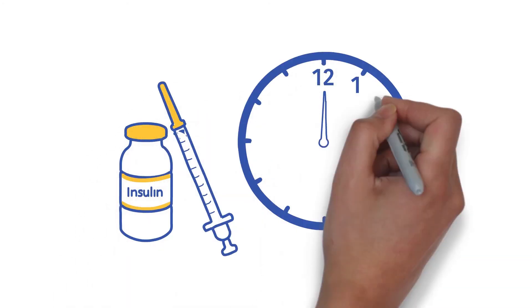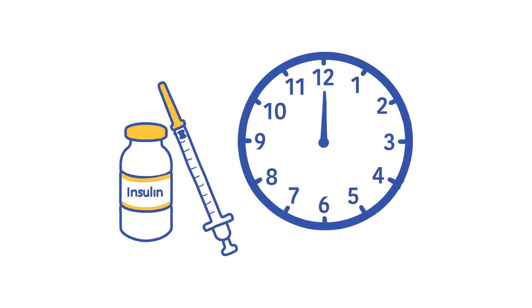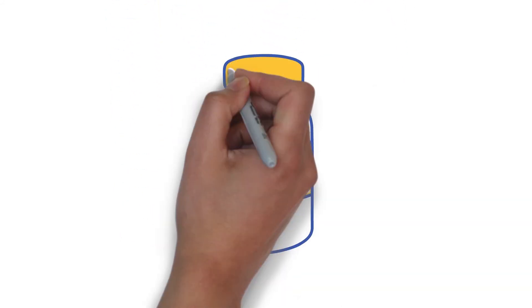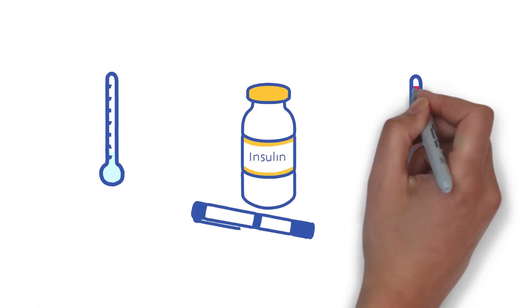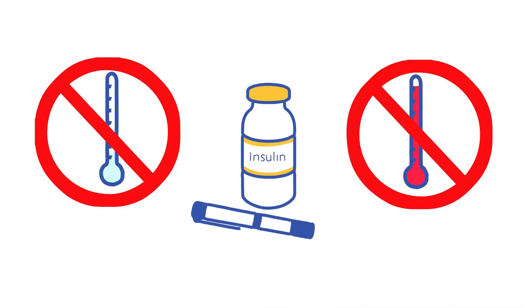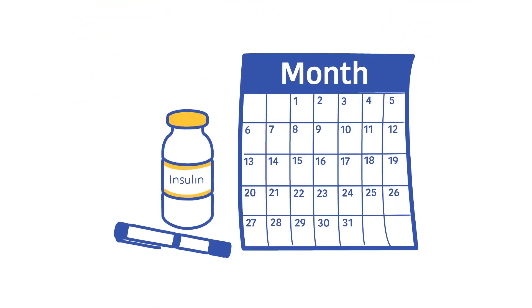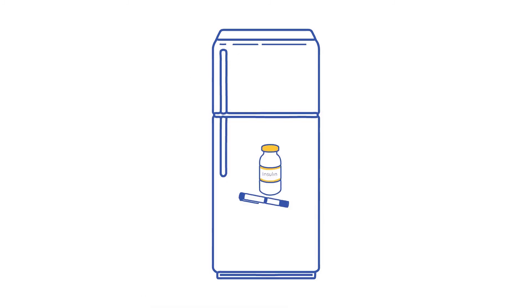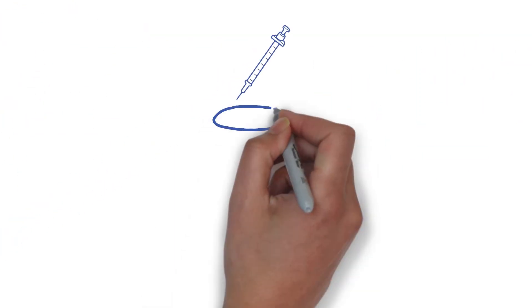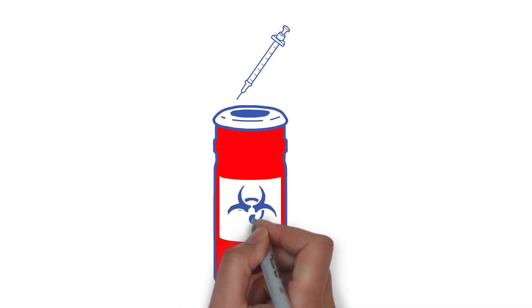To make the most of your insulin therapy: know what insulin you're using and when you should take it, know how to store your insulin, check the expiration date, and always follow the maker's instructions. Keep insulin away from extreme heat or cold. Store any bottles or pens being used at room temperature for about one month. Keep any unopened insulin in the refrigerator and let it come to room temperature before using it. Know how to dispose of used syringes and pens.